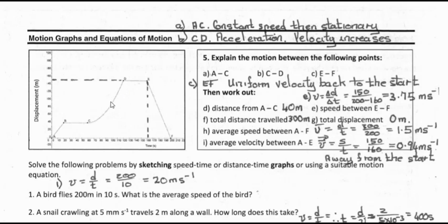So what the section from C to D shows is that the velocity is increasing. The gradient seems to be quite similar in part of this section, so you could say the velocity was more or less constant there, but the curvature is more pronounced just near D, so the velocity is definitely increasing there.